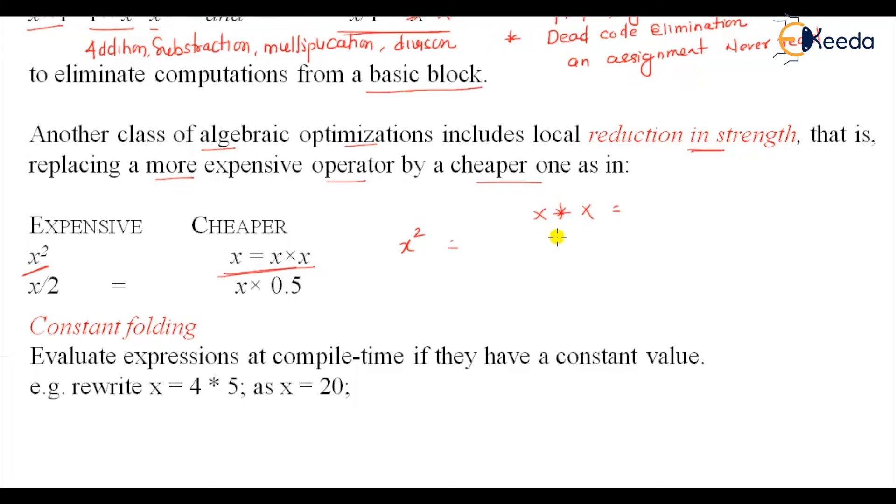So I can get rid of this multiplication and replace it by addition. Division: x divided by 2 can also be replaced by x multiplied by 0.5. Now division is costly, multiplication is relatively cheaper cost. Power is high cost and multiplication is low cost. So that is another algebraic simplification or optimization known as reduction in strength - high cost to low cost.